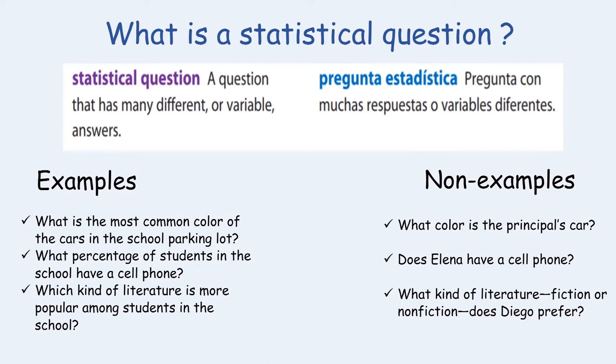Whereas the non-examples are very specific to one person and most likely would provide one answer. For example, what color is the principal's car? My car, for example, is red. Not much to vary in that situation. Does Elena have a cell phone? That's a yes or no answer. Not much variability in that question.